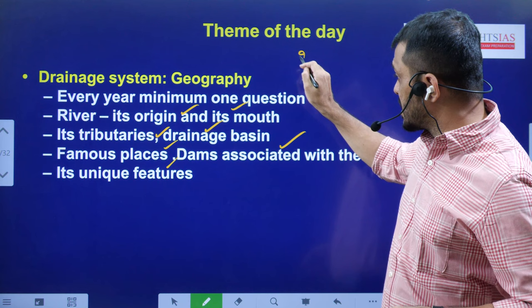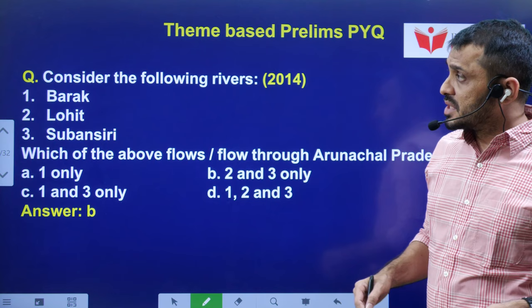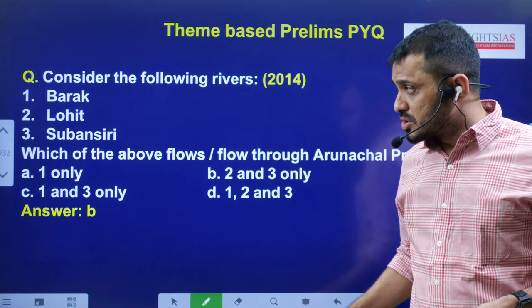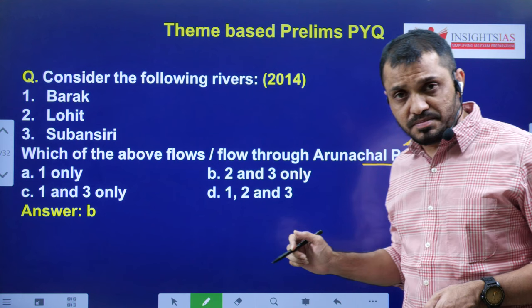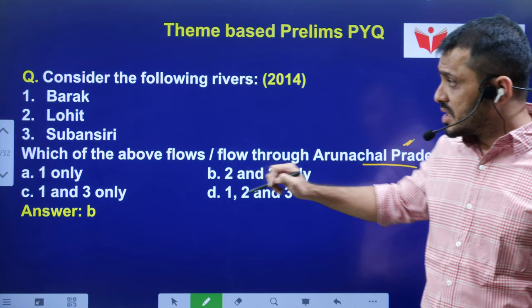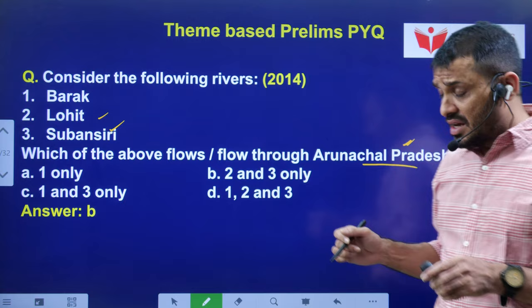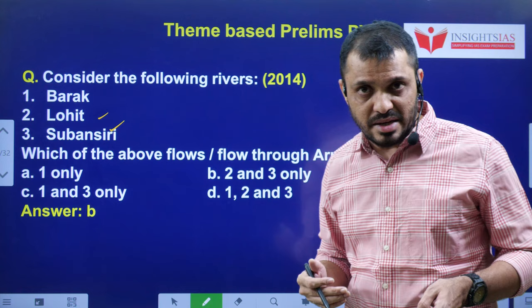For example, a sample question: 'Consider the following rivers — Barak, Lohit, and Subansiri. Which of the following flows through Arunachal Pradesh?' They are asking which river is related to a particular state. Lohit as well as Subansiri go through Arunachal Pradesh. Don't worry about the answer — try to understand how the questions are being framed in the examination so that you understand the pattern.